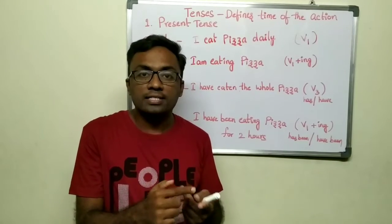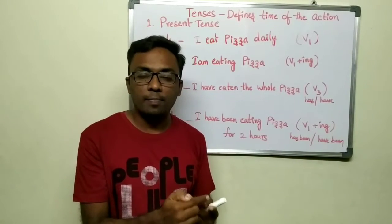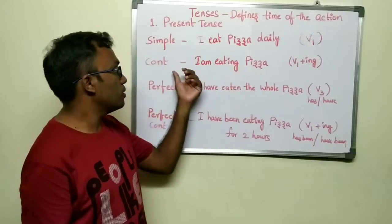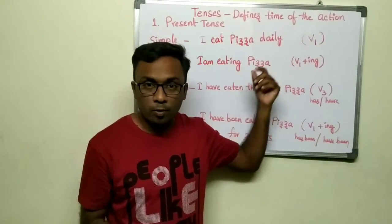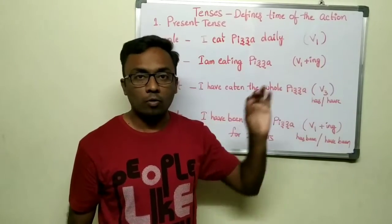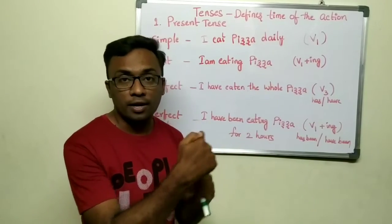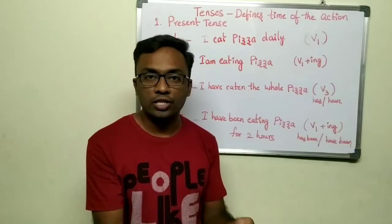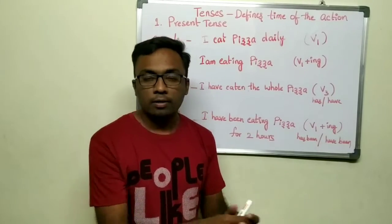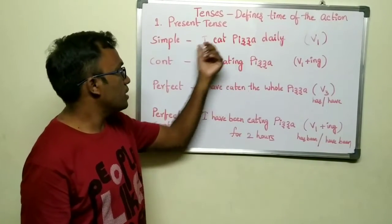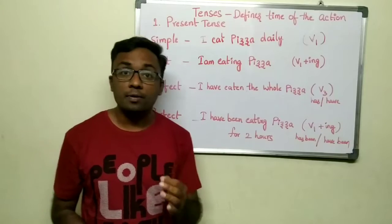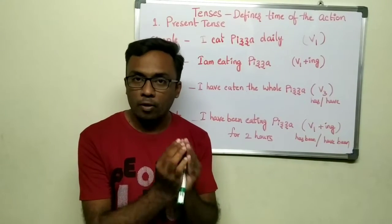Present continuous tense — the word 'continuous' itself gives a hint that the action is happening right now. In present continuous tense you say 'I am eating pizza' because you are still continuing that action. The verb form is V1 plus ING to indicate the continuous state. For example: 'I am singing a song,' 'I am cooking some vegetables.'